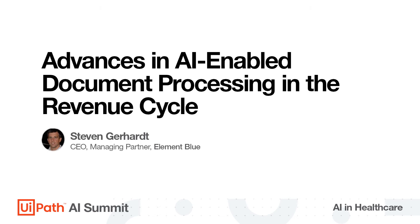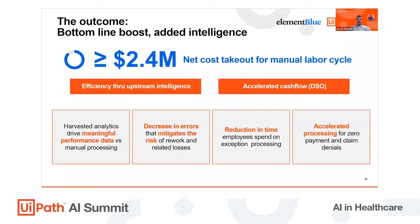A lot of organizations are looking to lean into that net cost takeout for the labor cycle. On an annual basis, it's analyzed close to two and a half million dollars, supported by two key drivers: efficiency and intelligence — probably the most important pieces to a revenue cycle owner — accelerating cash flow, and that DSO, day sales outstanding, pulling that cash into the books.